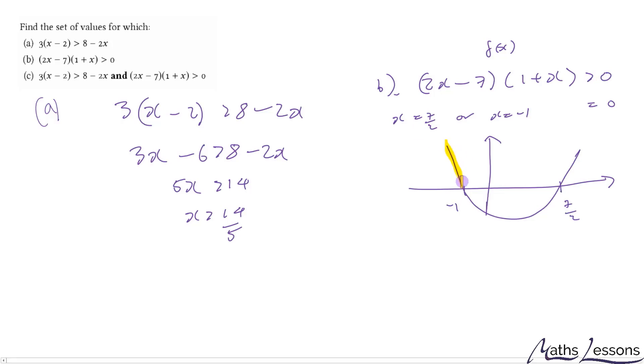And we want where it's greater than 0. So it's going to be here and it's going to be here. So our function is greater than 0 at these two points. So where x is less than minus 1 or x is greater than 7 over 2.